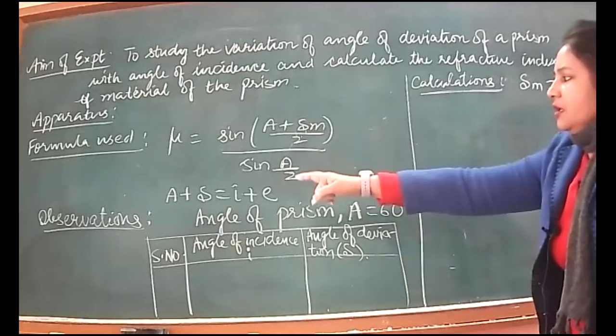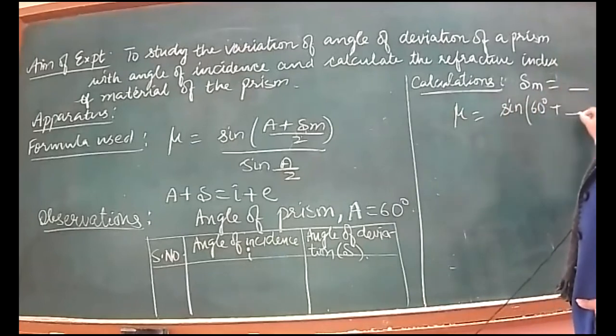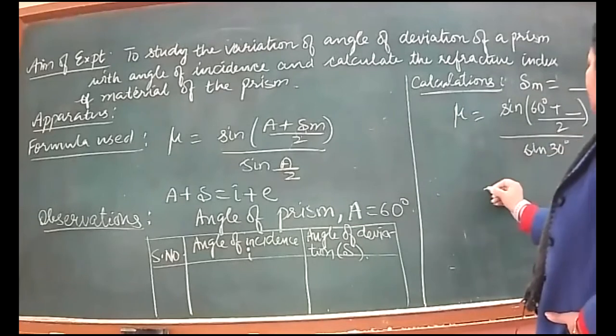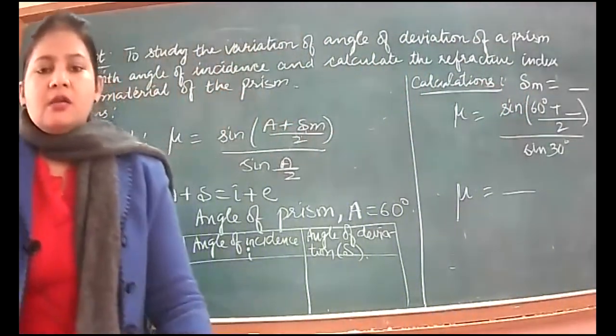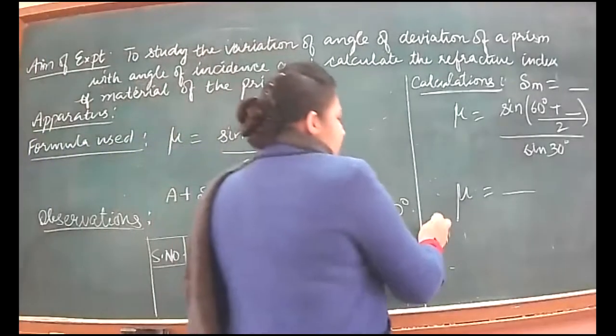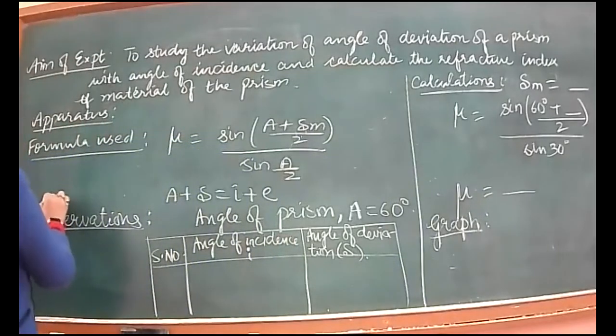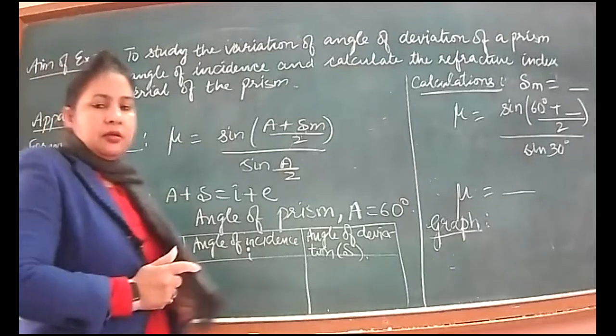Then we'll check the condition by putting values in the formula: mu equals sine of A plus delta m over 2, divided by sine A by 2. Since 60 by 2 is sine 30 degrees, by putting in the values we'll find the refractive index of material of the prism. We know prism is made of glass, so our answer should be 1.5. You will paste your graph here and ray diagrams.